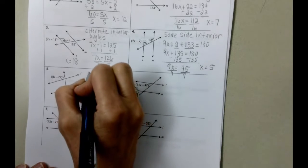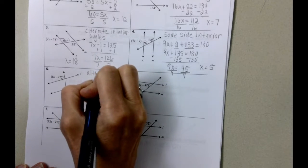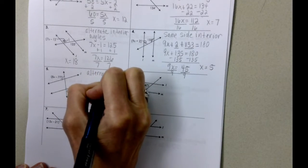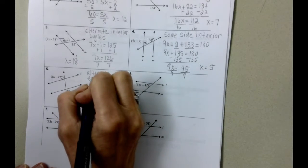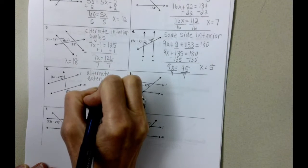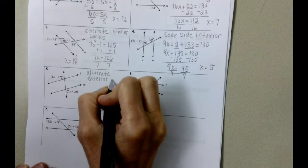They're on opposite sides, so we can say they are alternate. And this, again, is going to be an alternate exterior. They're on the outside of the parallel lines.